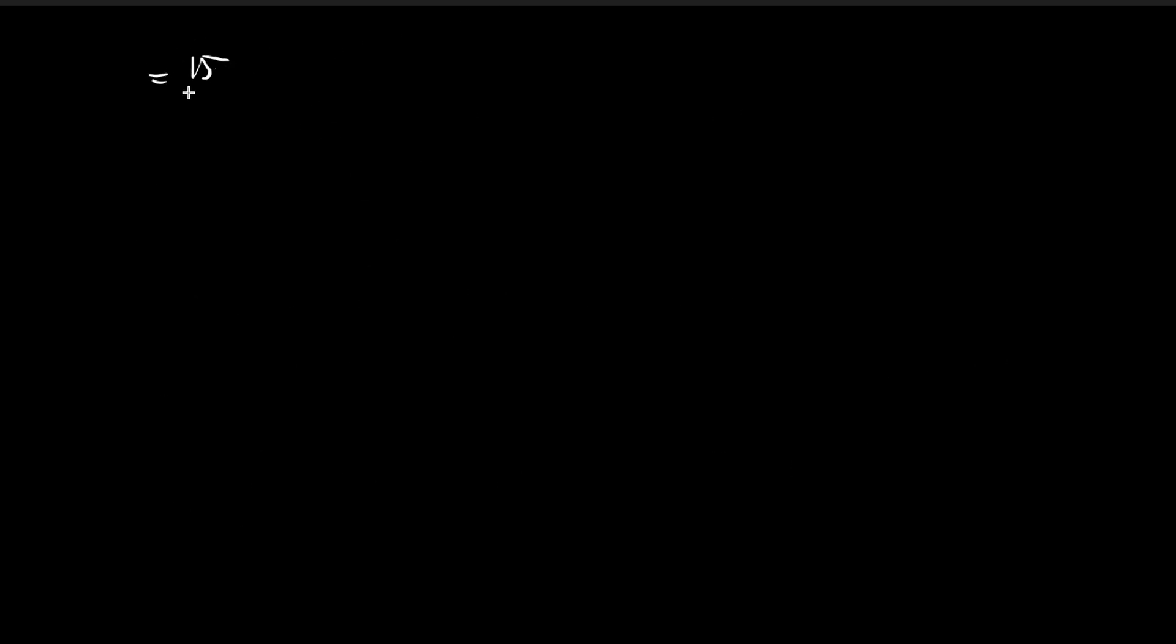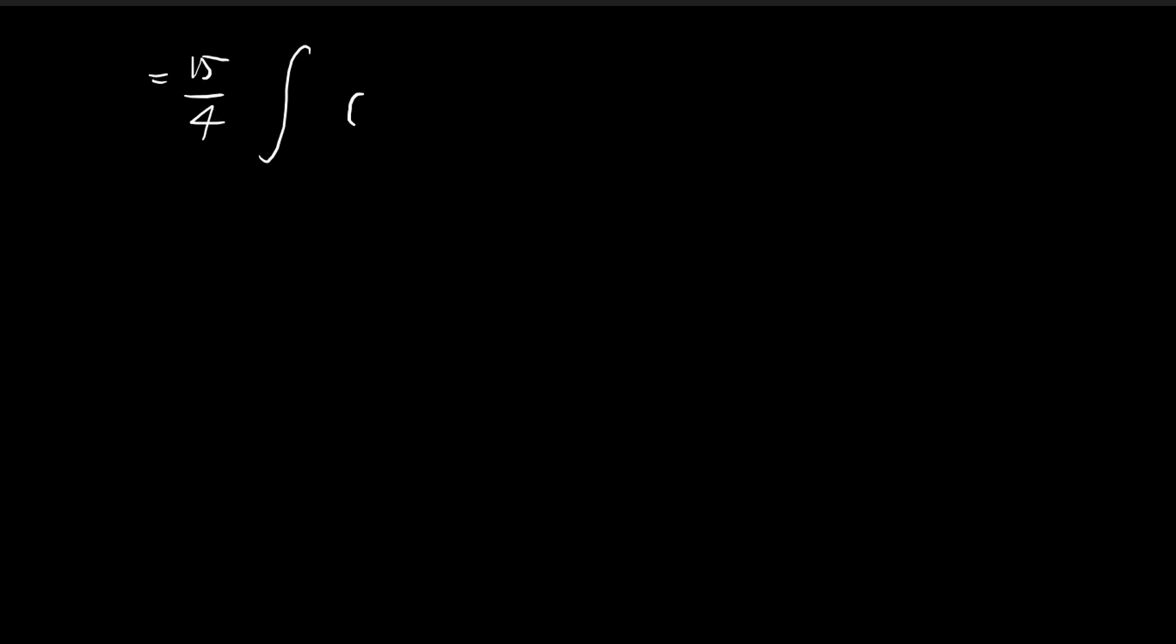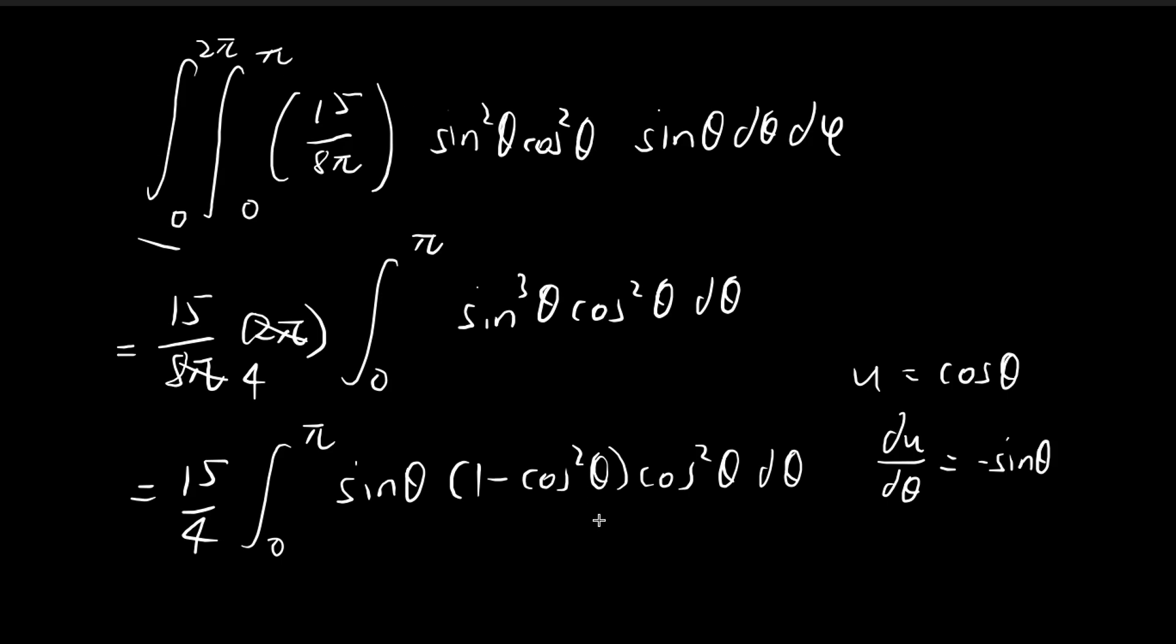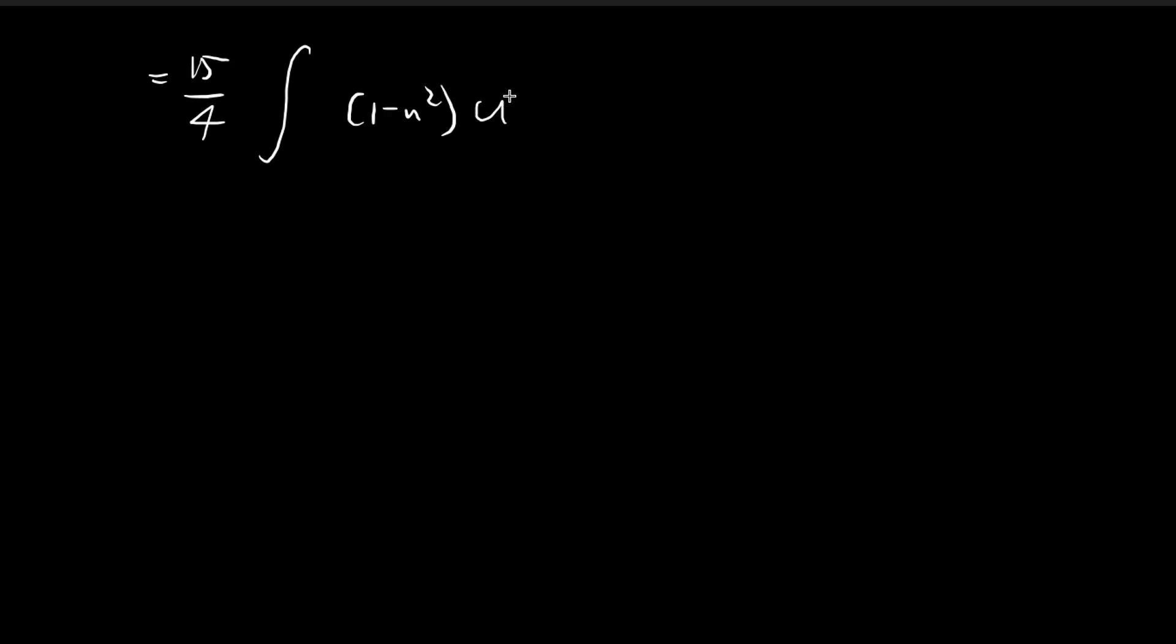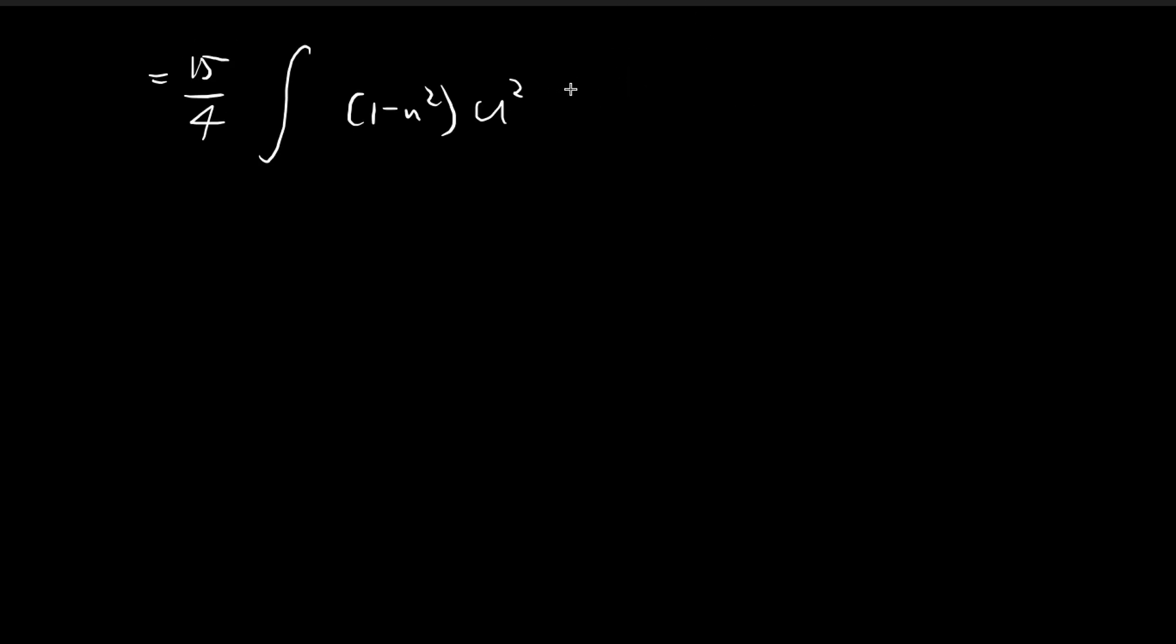And so that means this integral is going to be equal to the integral of, first of all, 1 minus u square, and then cosine square theta. That's just u square again. And then d theta is just equal to, so d theta times sine theta is equal to negative du. So we have negative du. And then the bounds, first of all, originally they went from 0 to pi.